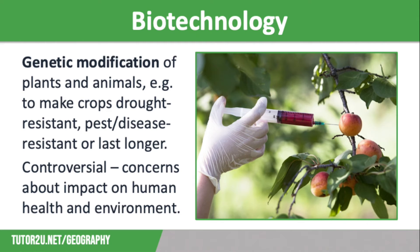Genetically modified organisms are very controversial and are still not widely used in Europe, although they are commonly used in the USA and Australia. Most modifications increase plant resistance to pests and diseases, improving food security. Plants can also be modified for better vitamins, proteins, flavour, longer shelf life, and to grow in poor conditions such as drought. However, many people are concerned about knock-on impacts on the environment and human health, including gene flow, genetic pollution from pollen spread, and pesticide resistance.